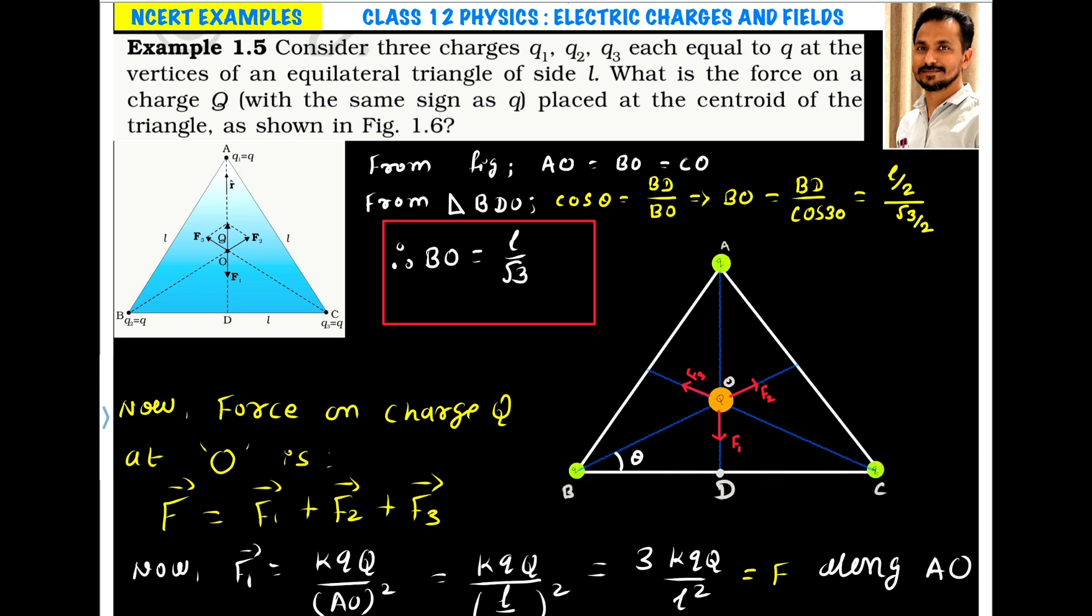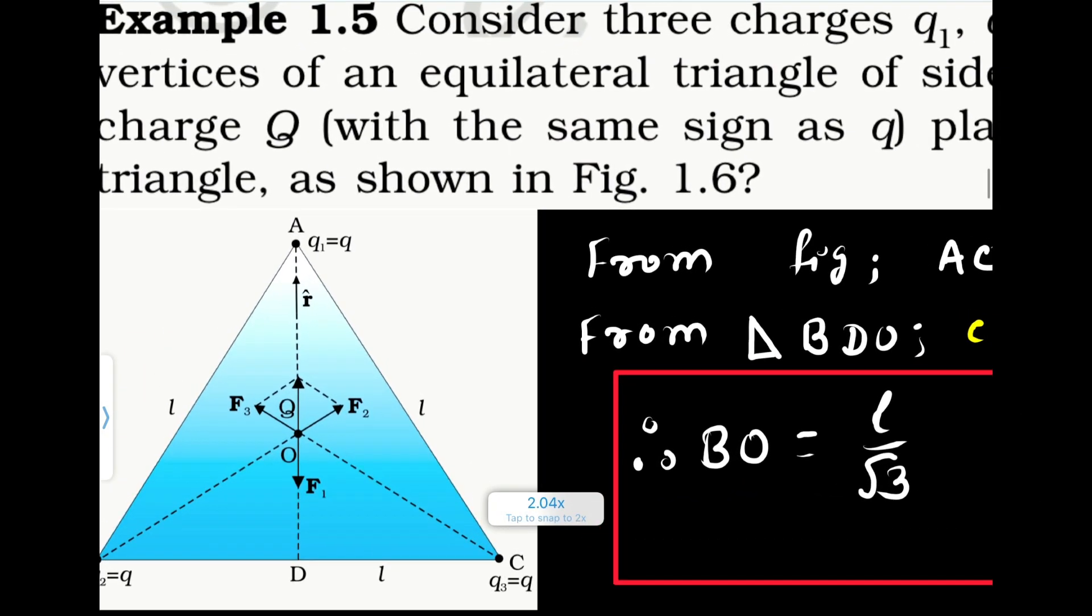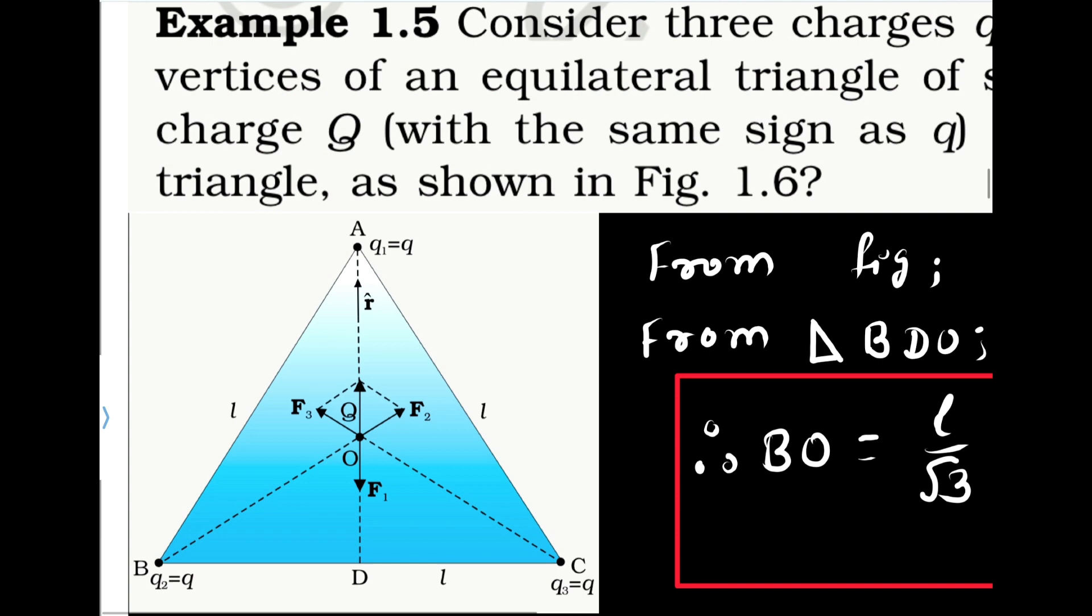Then what is the force on the charge Q placed at the centroid of the triangle? As per the NCERT figure, we have these three charges Q1, Q2, and Q3, all have same charge and same magnitude. Let us assume all are positive. We are placing an unknown charge Q which is also positive because it is given that with the same sign as q. As this is positive, it will be repelled by this charge Q.